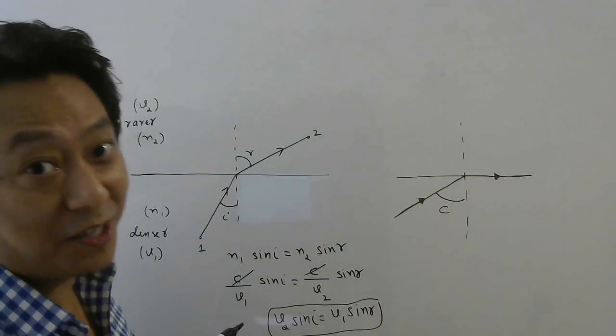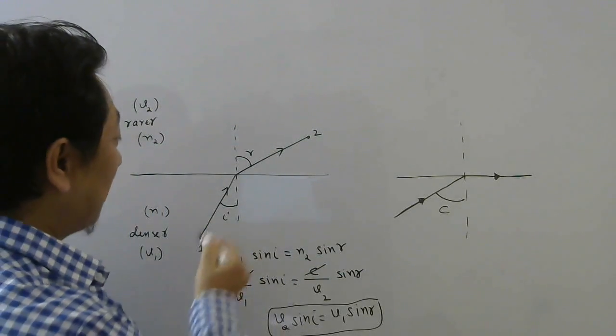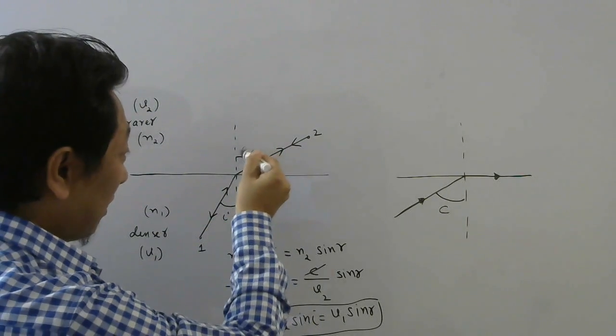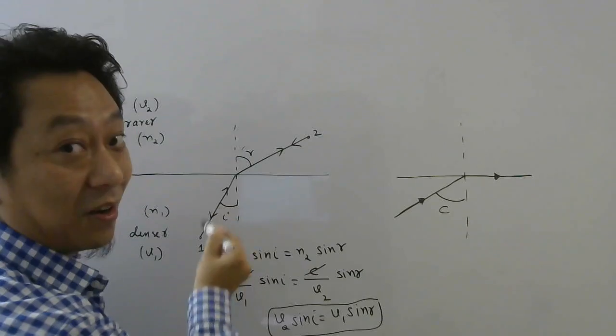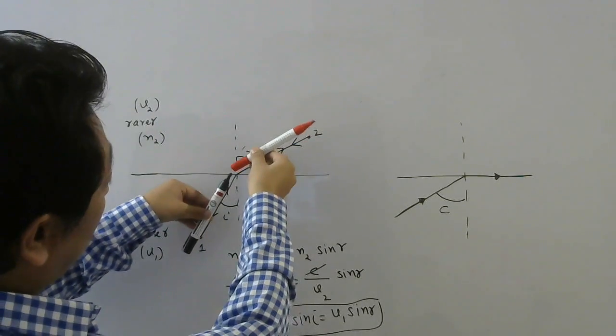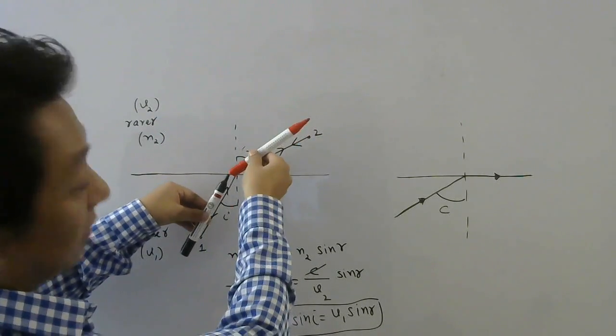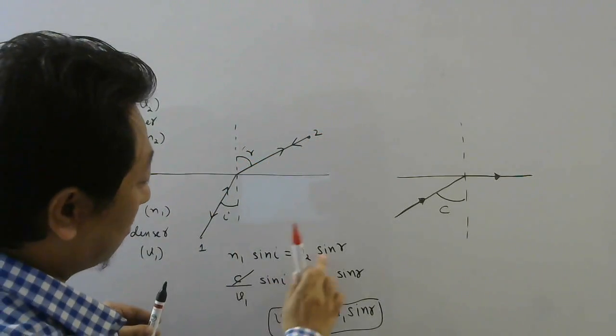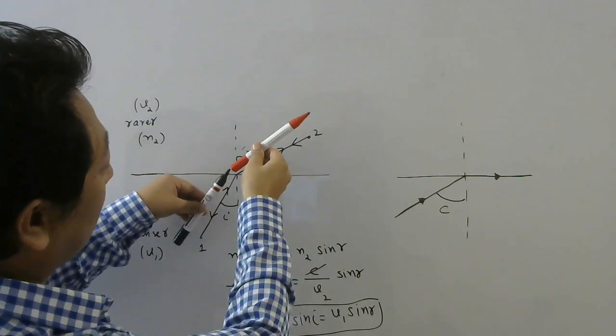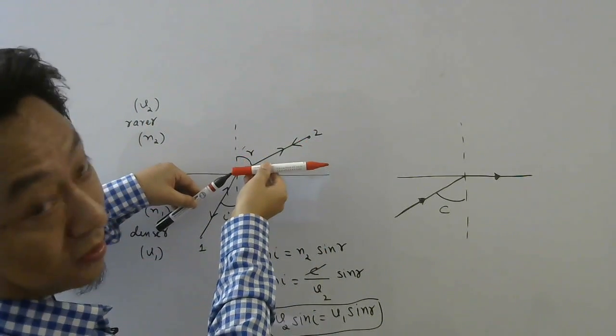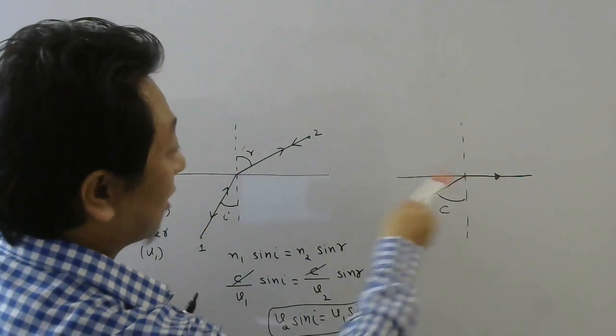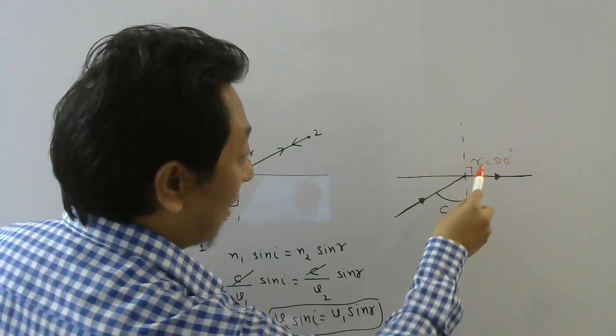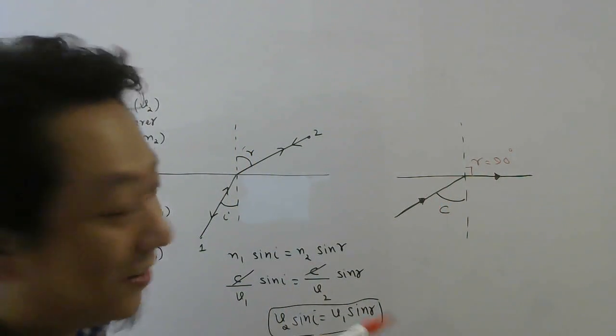Please understand light follows reversibility principle and that means if light can go this way, light can come also this way. In other words, if this was angle of incidence this will be angle of refraction. If you notice angle r is more than angle i and as you increase angle i, angle r will also increase because these two are proportional. As angle i increases angle r also increases. When angle r becomes 90 degree, that time the angle of incidence is called critical angle.